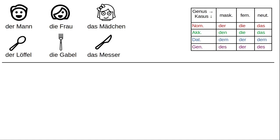Der Löffel, die Gabel und das Messer — the spoon, the fork, and the knife. We'll also need these verbs: hat, meaning 'has,' and gibt, meaning 'gives.'